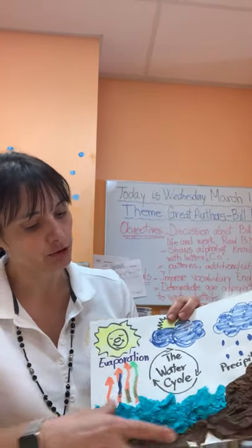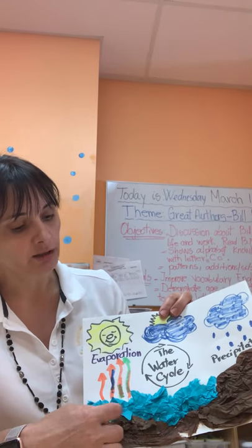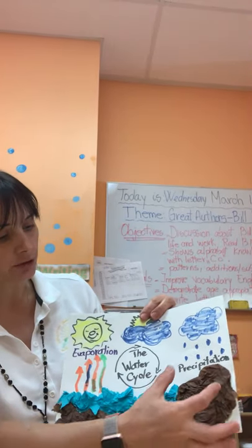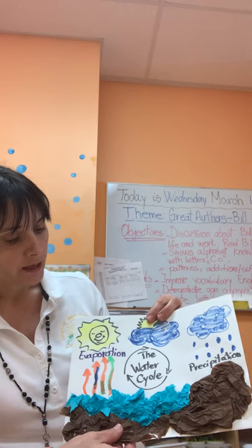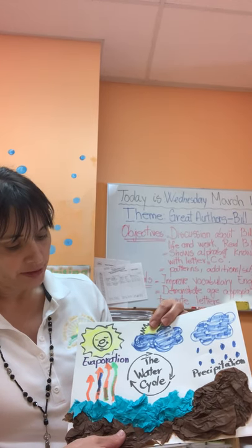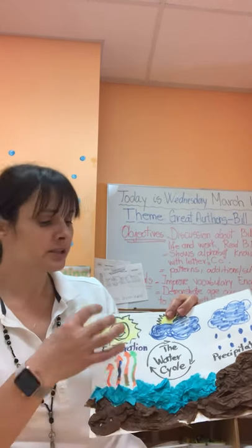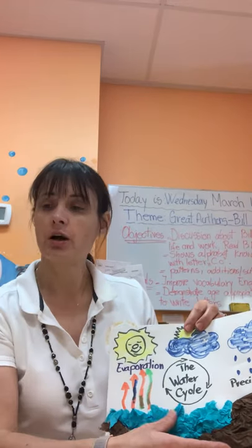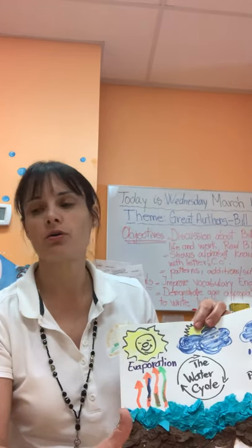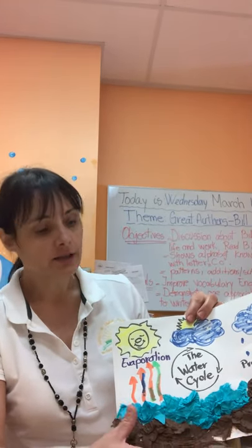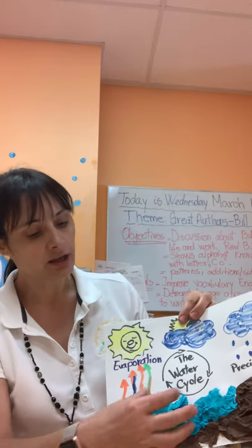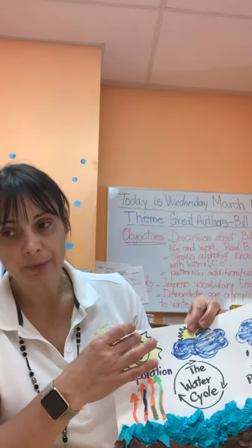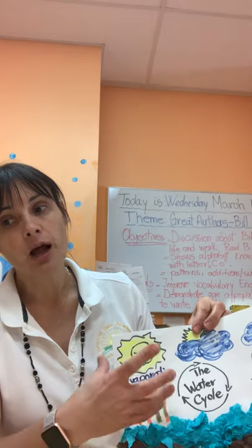Here we show the ground and the water — like rivers and oceans — that we have on the ground. The first thing that happens is the Sun hits the water on the ground, like rivers, oceans, and lakes.